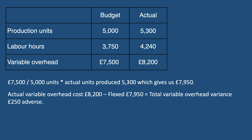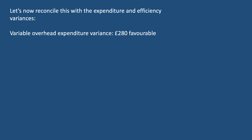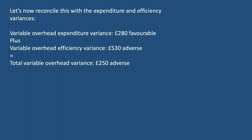Let's now reconcile this with the expenditure and efficiency variances. The variable overhead expenditure variance was £280 favourable, plus the variable overhead efficiency variance of £530 adverse, gives us a total variable overhead variance of £250 adverse. So we can see from this that the figures reconcile.